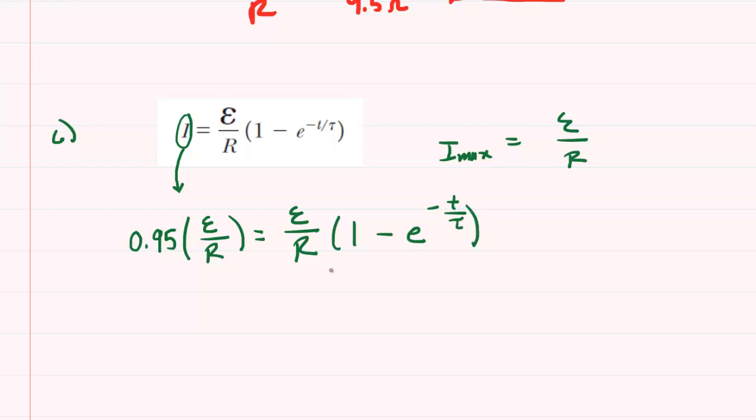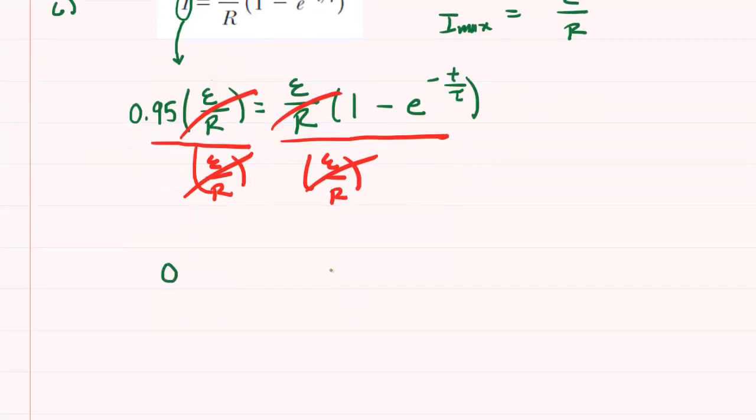We'll notice that the quantity EMF divided by resistance appears on both sides of the equation. So we can actually divide both sides by that quantity. When we do that, it will conveniently cancel on both the left and the right-hand side. We can rewrite this equation in much simpler terms. It will be 0.95 equals, and because of the cancellation on the right-hand side, we actually no longer need the parentheses around this quantity here.